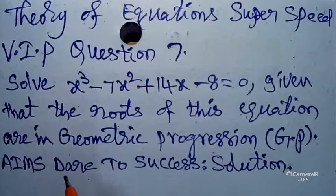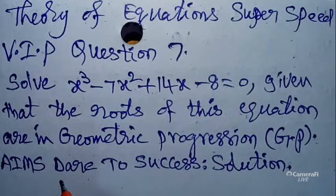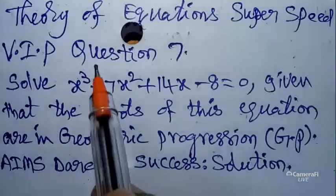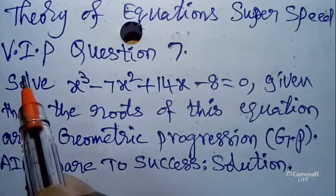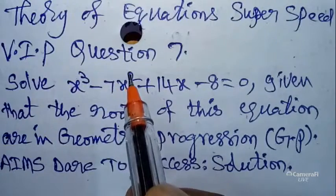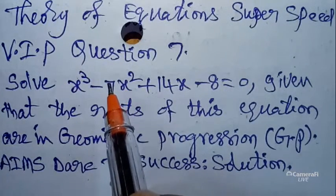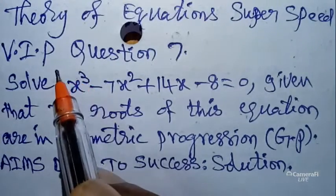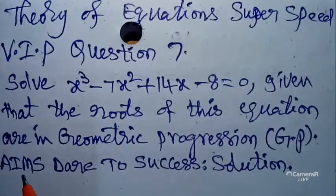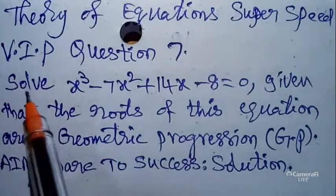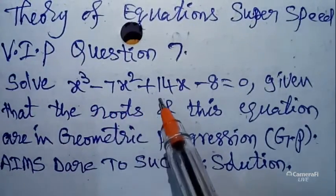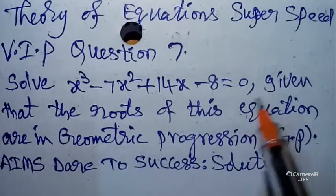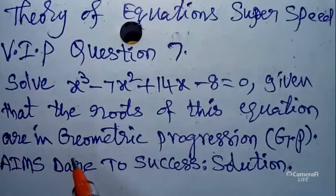Hi, hello, namaste my dear students! Today I came with a new trick and a new video. I want to discuss with you Theory of Equations — super speed VIP question, 7th part. VIP means Very Important Previous question. Today our question is: solve x³ - 7x² + 14x - 8 = 0, given that the roots of this equation are in Geometric Progression (GP).